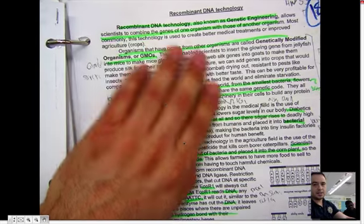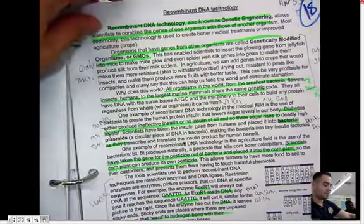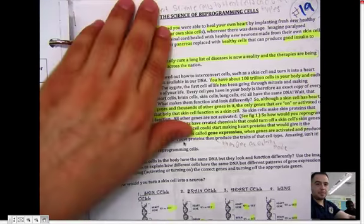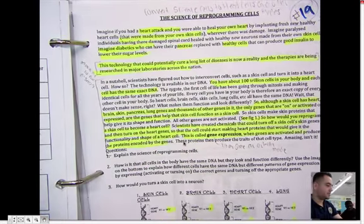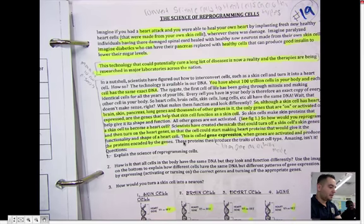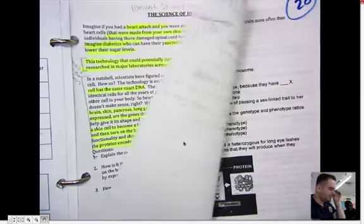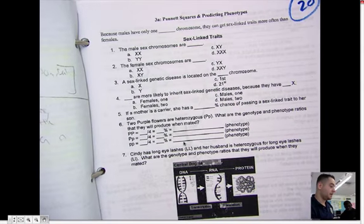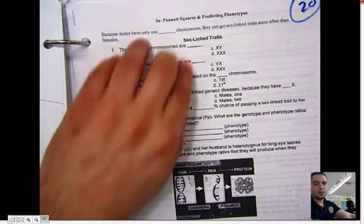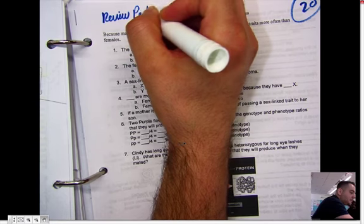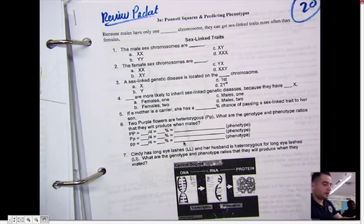Number 19, recombinant DNA technology, genetically modified organisms. That's also on the exam there. Number 19, the science of reprogramming cells. That's what you just received, I think, today. So you should talk to the techs and then answer some of the questions there. And then we should have worksheet 20, which is your review packet. So I'm just going to retitle it review packet. Make sure you practice all those problems. A lot of them are on the exam.